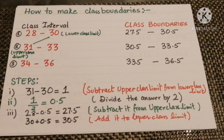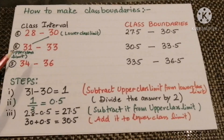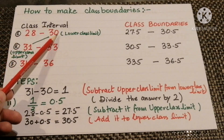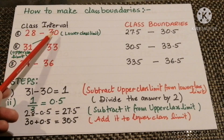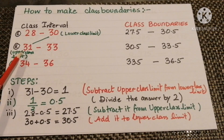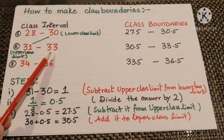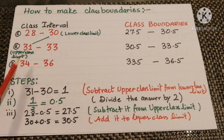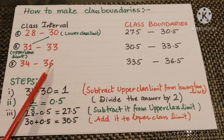How do we make class boundaries from class intervals? We have three class intervals. The first has values 28 and 30, where 28 is the lower class limit and 30 is the upper class limit. The second is 31 and 33, where 31 is the lower class limit and 33 is the upper class limit.